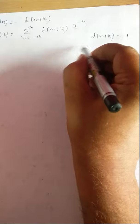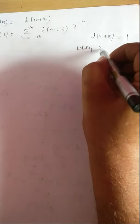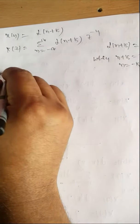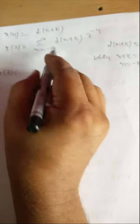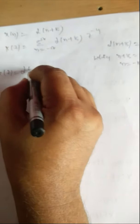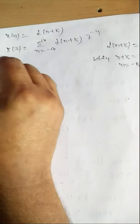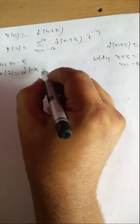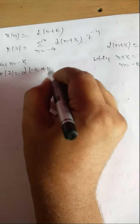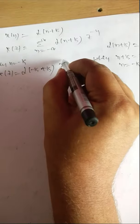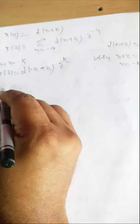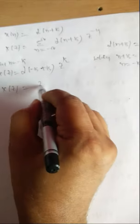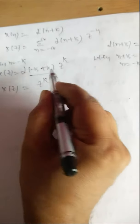The solution exists only at one value of n, when n = -k. At n = -k, this becomes δ(-k+k) · Z^(-(-k)) = δ(0) · Z^k. Since δ(0) = 1, we get X(z) = Z^k.